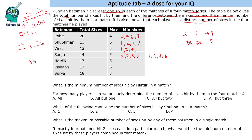For Hardik with total seventeen, the average is around four. Trying one and six: one plus six is seven, we need ten more from two values — but two-plus-eight, three-plus-seven, four-plus-six, and five-plus-five are all either invalid or repeat a boundary value. So one and six doesn't work. Trying two and seven: two plus seven is nine, we need eight more. Three plus five equals eight, but four would be less than the supposed minimum, so that doesn't work either.